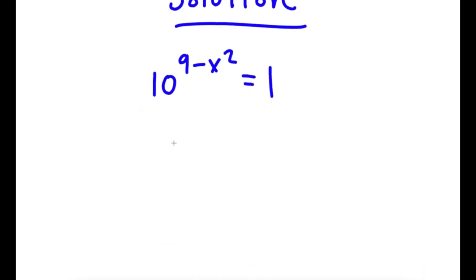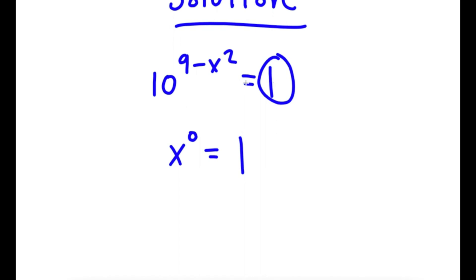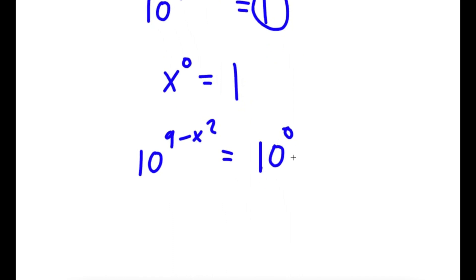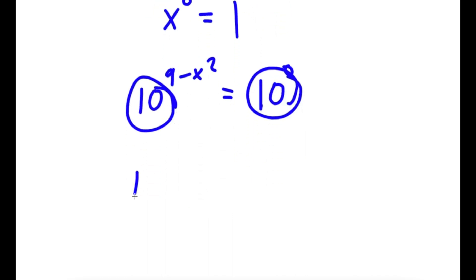If I have something in the form x to the power of 0, any number to the power of 0 is simply 1. So we see 1 here, and 1 is the same thing as a number to the power of 0. I'm going to rewrite 1 as 10 to the power of 0. So now I have 10 to the power of 9 minus x squared is equal to 10 to the power of 0, because 10 to the power of 0 is the same thing as 1. This gives us the same base of 10 on both sides.